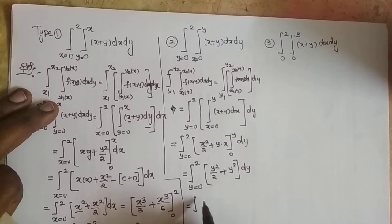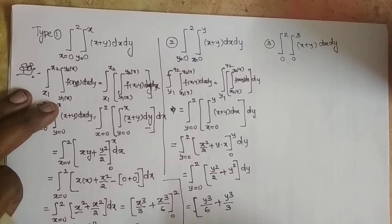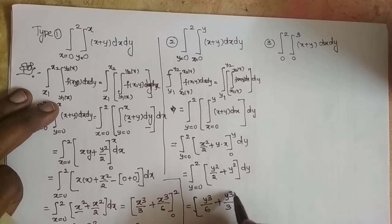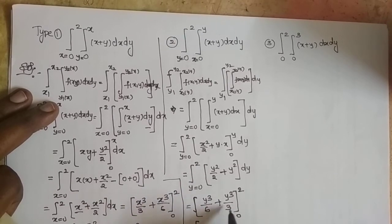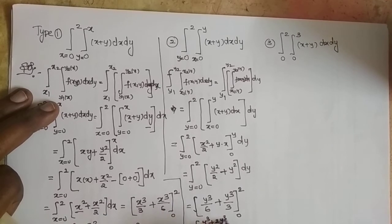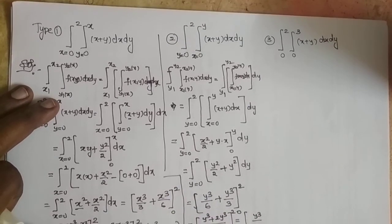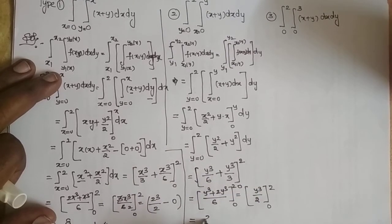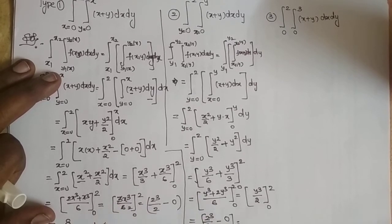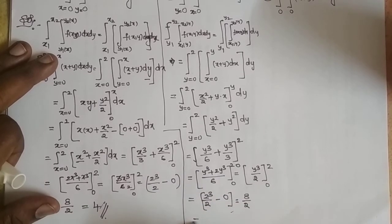Now integrate with respect to y: y²/2 + y² = 3y²/2. Integrating gives y³/6 + y³/3. Taking LCM 6: (y³ + 2y³)/6 = 3y³/6 = y³/2, evaluated 0 to 2. Substituting: 2³/2 minus 0 = 8/2. The answer is also 4. This is Type 2.